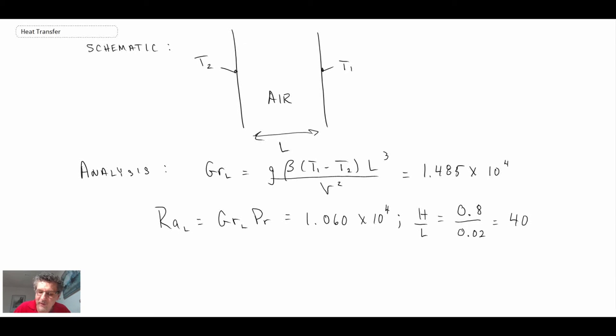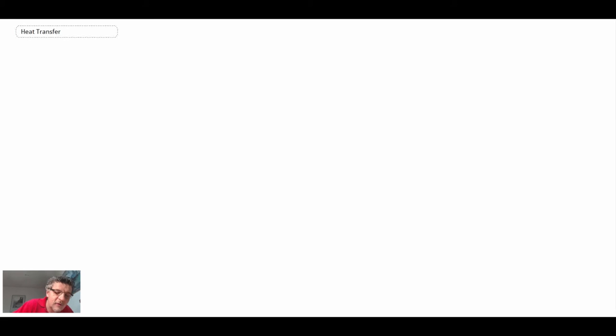The Rayleigh number here, Grashof times the Prandtl number, we have 1 times 10 to the 4. So looking back at the previous lecture, you'll be able to find the correlation. There are two that we can use. I'm going to use one that's a little bit more complex.